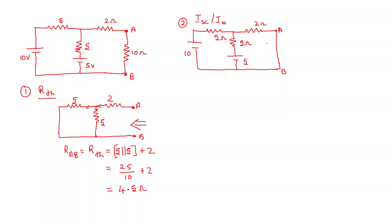Now we have to find the current through this short circuit path. Looking at this circuit, we can find the current through this path using mesh analysis — we have already done mesh analysis in previous videos. Let me take mesh current I1 in the clockwise direction and I2 as the second mesh current. If I find I2, that will be the current through the short circuit path, which is IAB.